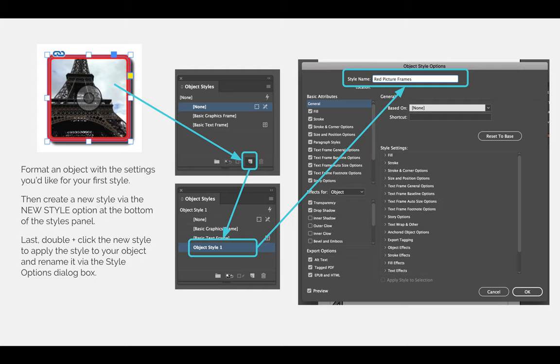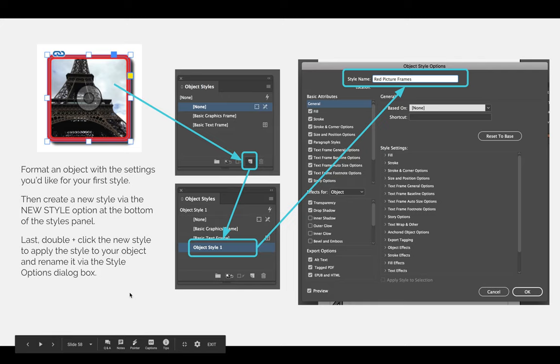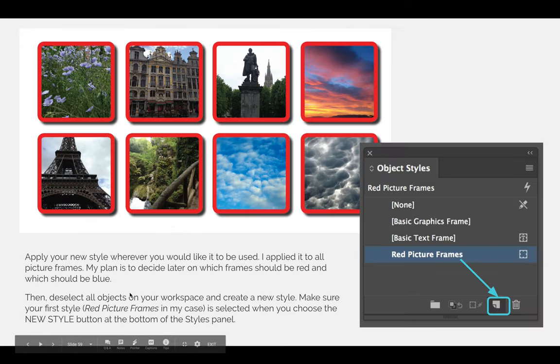Here is an example of how you would create the styles. First, format your first object 100% the way you want it to be. When you have it selected, create a new style — it'll be an object style. Immediately double-click the style, name it 'red picture frame,' and select OK. Once you have the first style, you can apply it to all the pictures you're going to use in your project.